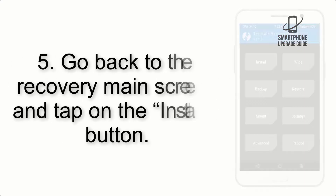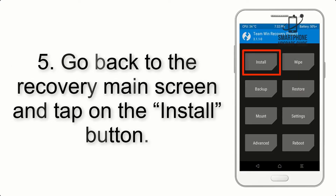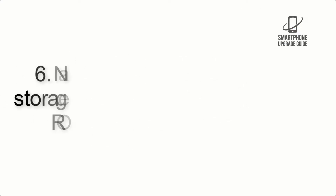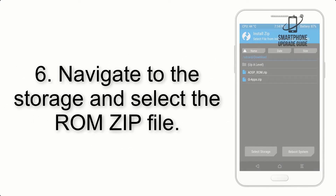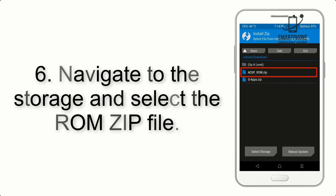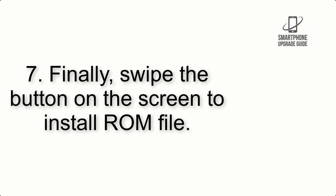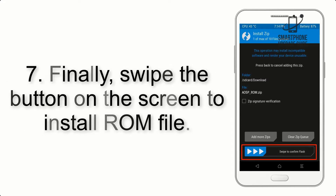Step 5: Go back to the recovery main screen and tap on the Install button. Step 6: Navigate to the storage and select the ROM zip file. Step 7: Finally, swipe the button on the screen to install the ROM file.